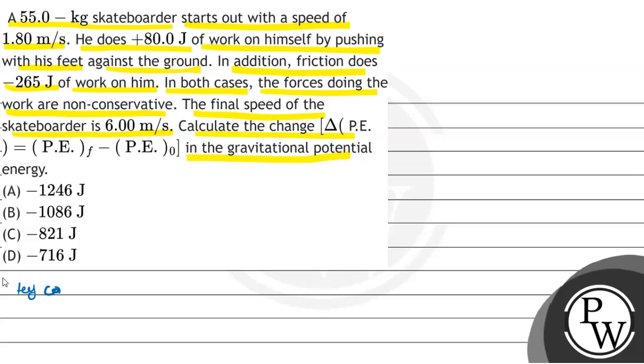Key concept is written here. Key concept is the work energy theorem. Work energy theorem what is, Bacho? Work done is equal to change in mechanical energy. So we can say that kinetic plus potential. This is the formula, equation 1.